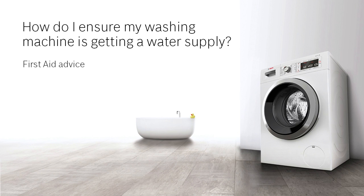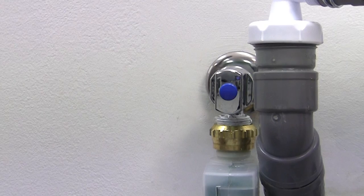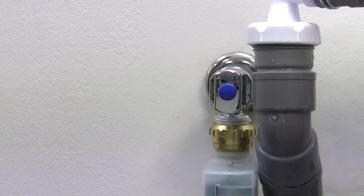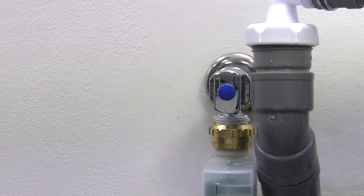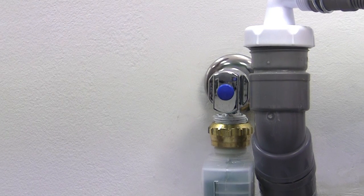How do I ensure my washing machine is getting a water supply? A washing machine may show an error code for a water filling fault. The error is caused by fine particles blocking the inlet filter which reduces the water flow into the appliance.